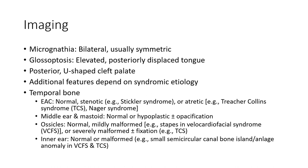Imaging. Micrognathia is bilateral and usually asymmetric, with glossoptosis and a posteriorly displaced tongue, and posteriorly U-shaped cleft palate. Additional features depend on the associated syndrome, including microtia and temporal bone anomalies.